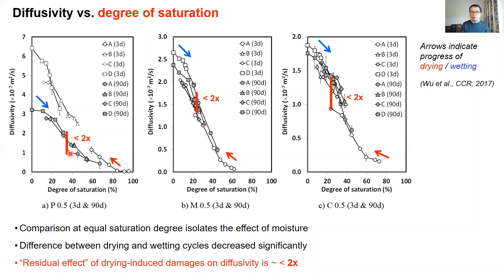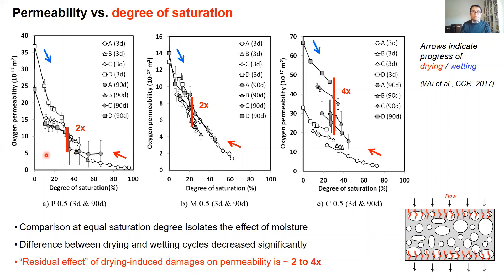A similar set of data for gas permeability shows that the residual effect of drying-induced damage ranges from a factor of two for pastes and mortars to a factor of four for concrete. This is clearly much higher than for diffusion because pressure-induced flow is more sensitive to microcracks. This is also consistent with our earlier observation that microcracking increases with aggregate size, and therefore the residual effect in concrete is much greater than in mortars or paste.